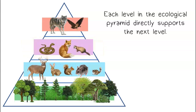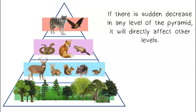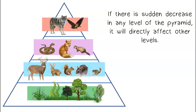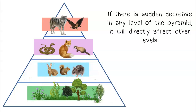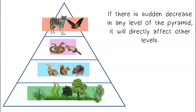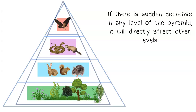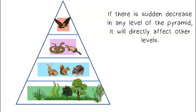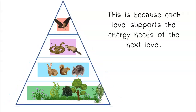Each level in the ecological pyramid directly supports the next level. If there is a sudden decrease in any level of the pyramid, it will directly affect other levels, because each level supports the energy needs of the next level.